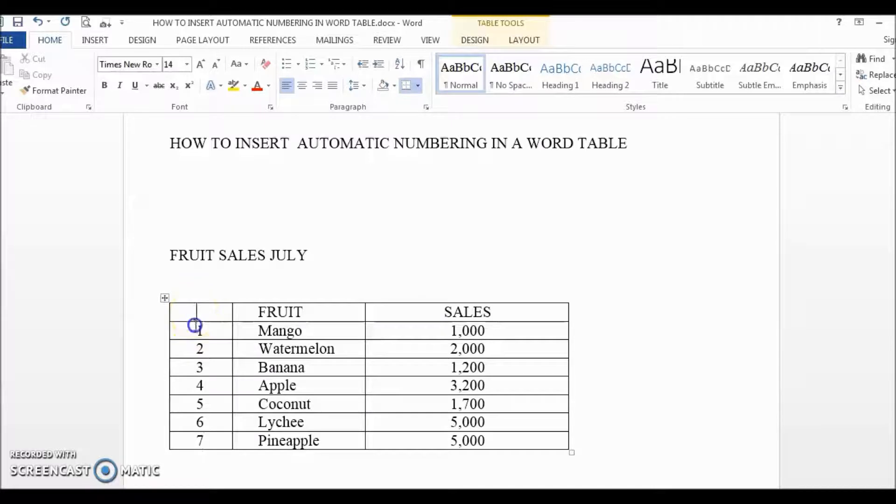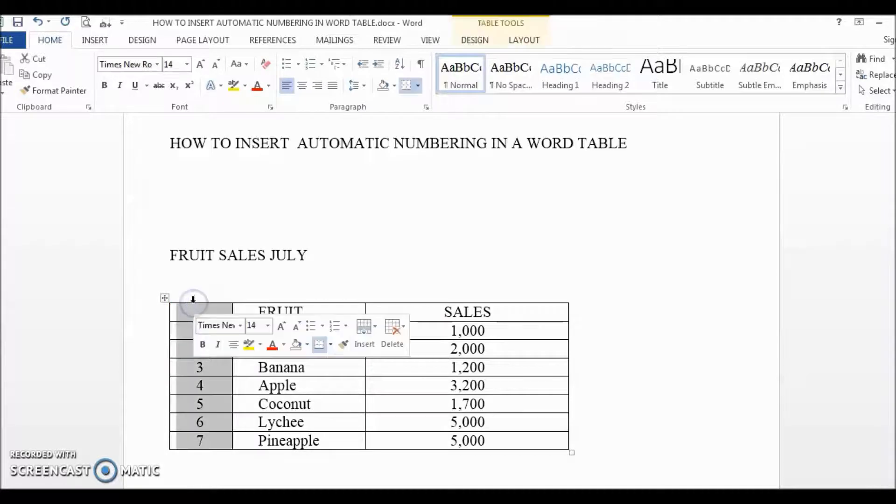Of course, we can manually select the column by using our mouse, but let me show you an easier way to select the entire column at once. You just need to move the mouse cursor to the first cell of the column until you see the black down arrow. This is very important. Wait until you see the black down arrow, and then click to select the entire column and then press delete to delete the manual list.